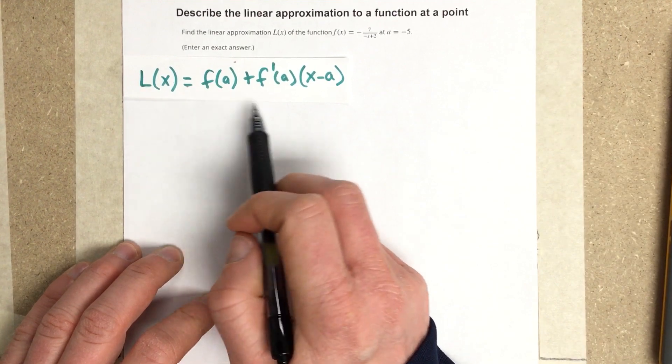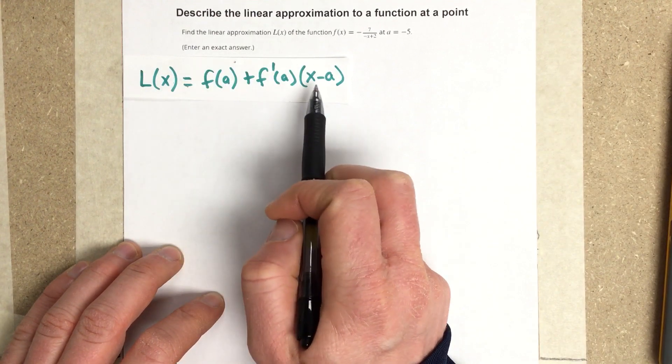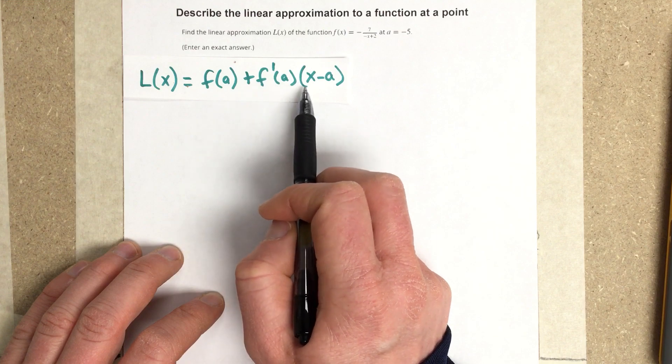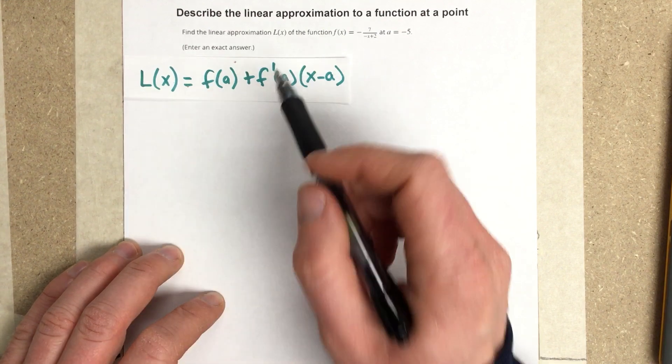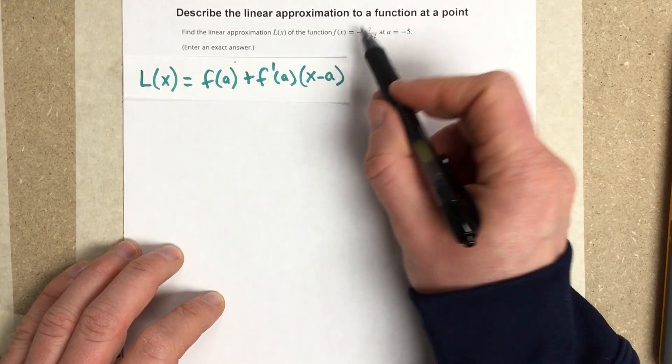Remember the linearization function or equation is F of A plus F prime of A times X minus A. We need to find the derivative of this function here.